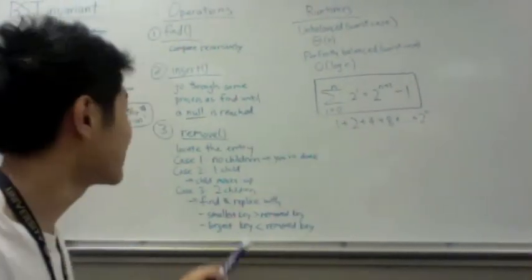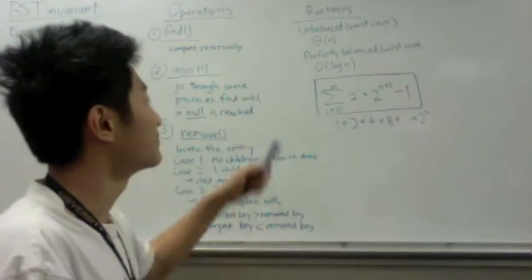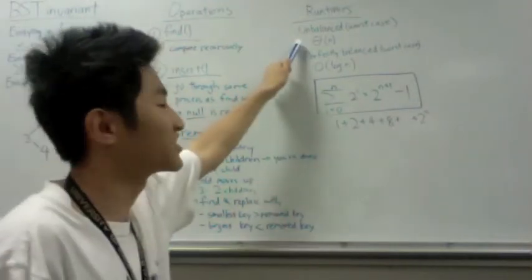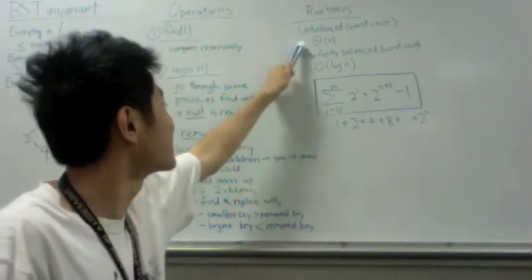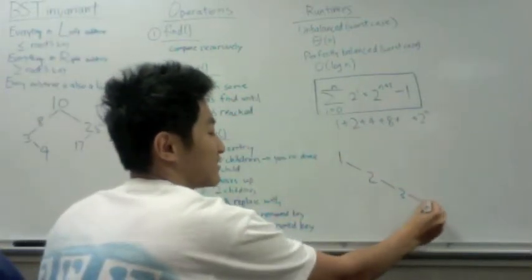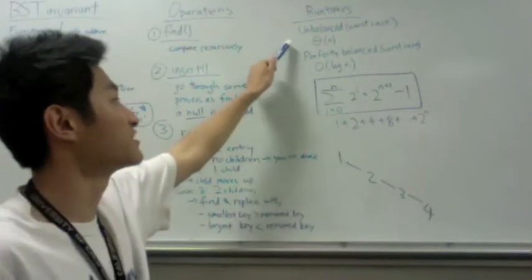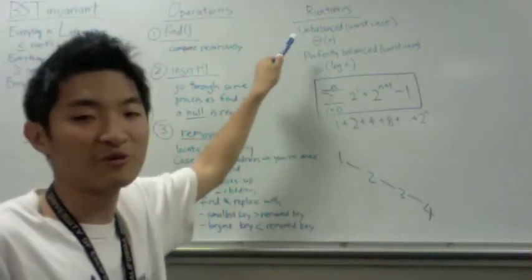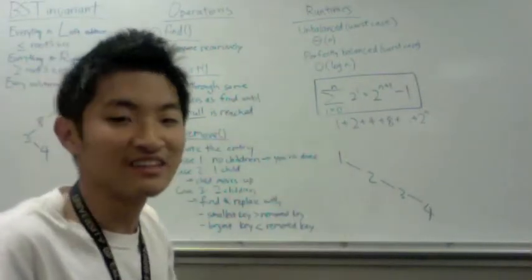Finally, a brief discussion of runtimes. Remember that the binary search tree can be unbalanced and so it can easily look like this, in which case all your operations will be in the worst case theta n, linear time.